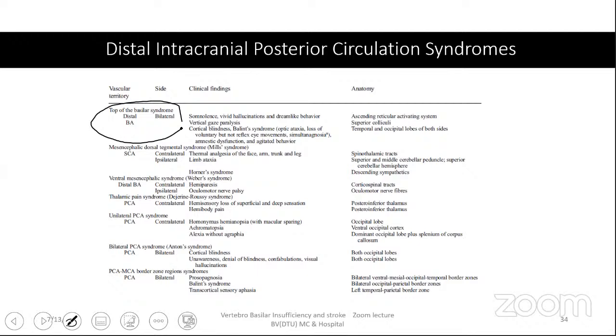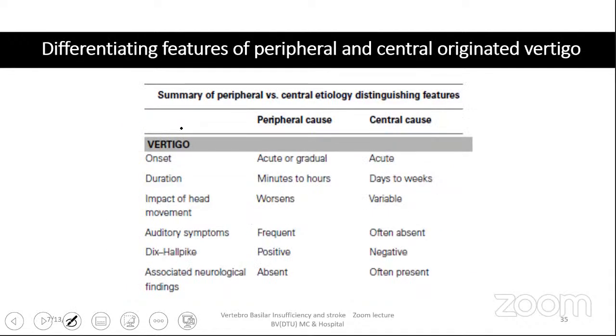There are bilateral occipital lobe, PCA-MCA border zone features including prosopagnosia, Balint syndrome, and transcortical sensory aphasia. This table summarizes all findings of the posterior circulation across the three territories.